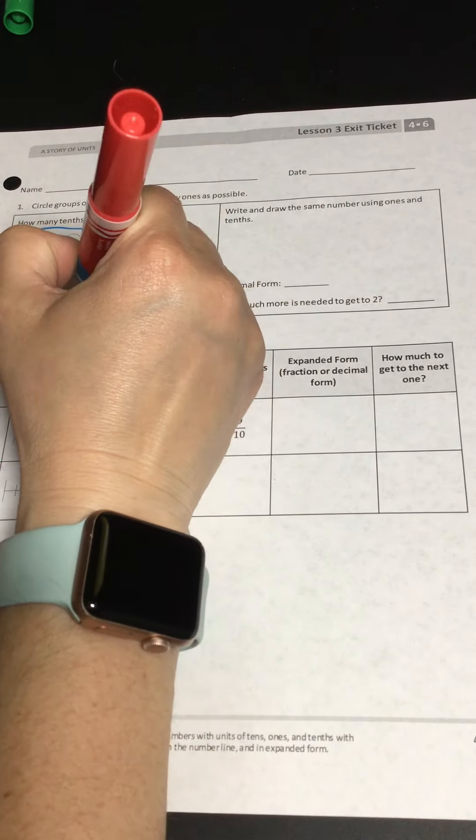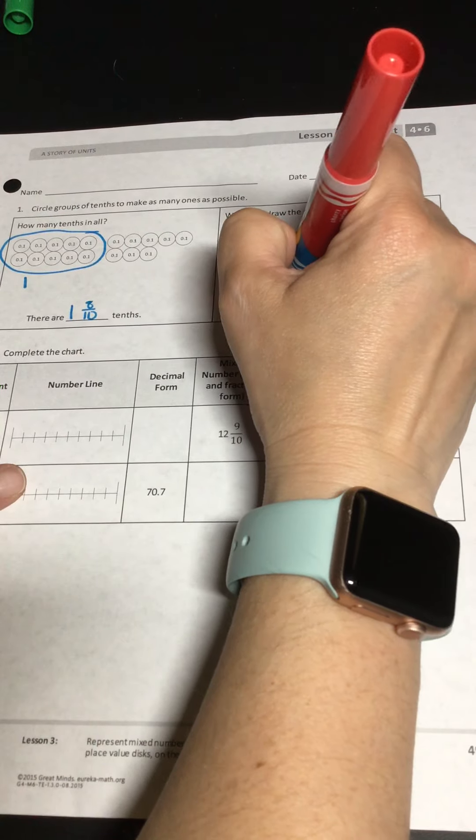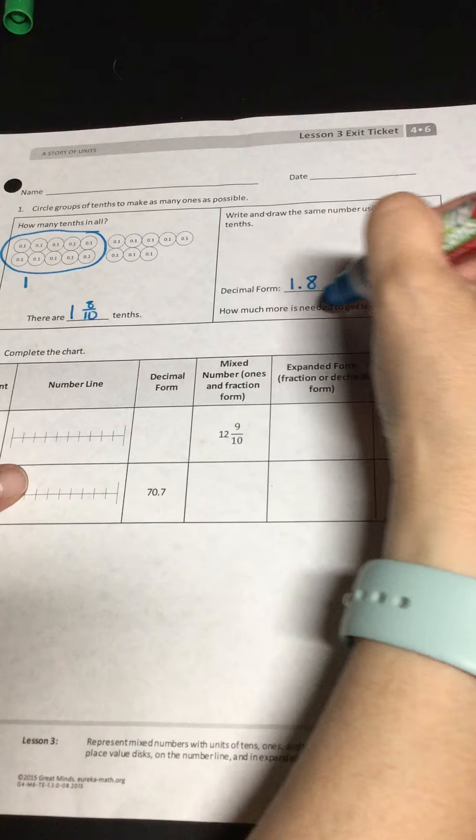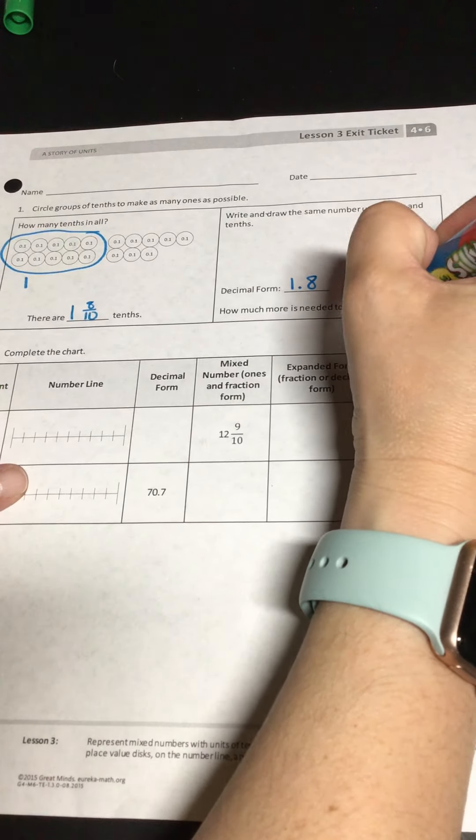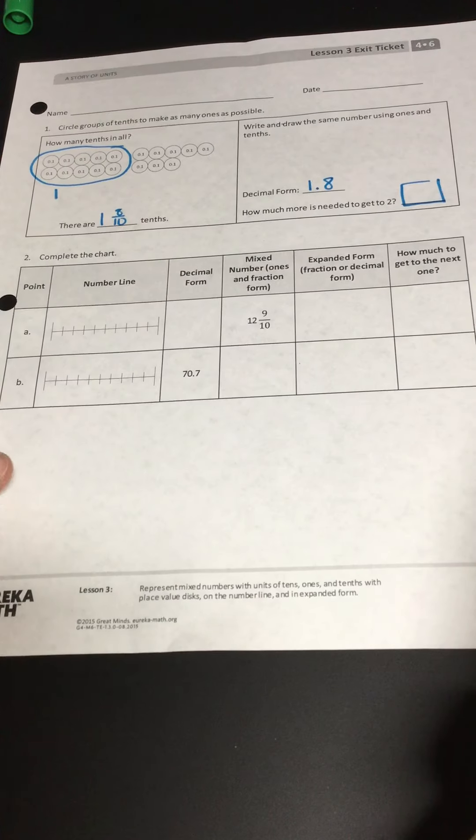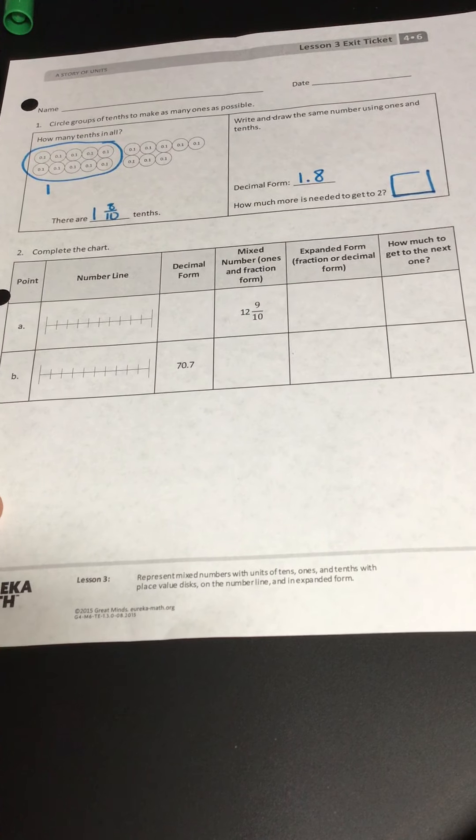This one says, write and draw the same number using ones and tenths. So my decimal form would be 1.8. And then it says, how much more is needed to get to two? I'm going to let you figure that out on your own.